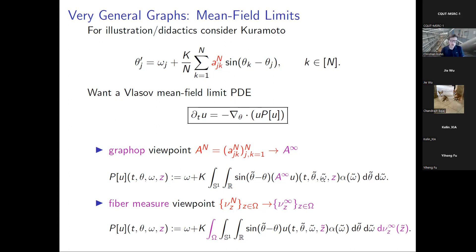Rather than a graphon convolution kernel W, the graphop limit acts directly on the density, giving a natural generalization to heterogeneous, intermediate, and sparse structures. Via fiber measures — integrating against all fibers — depending on which fiber you are at, you get an entire family of mean field limit PDEs. How heterogeneous you are determines how large your system of mean field PDEs becomes — which is applicable to neural nets, where you expect some reasonably low-dimensional subspace in z to govern the final mean field dynamics.